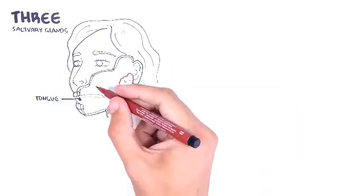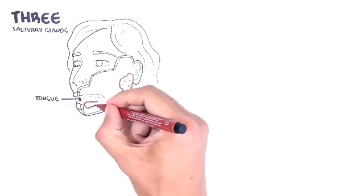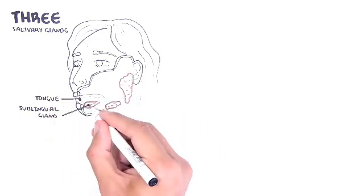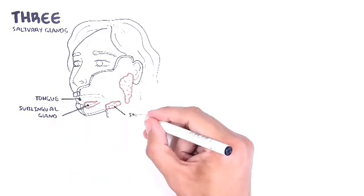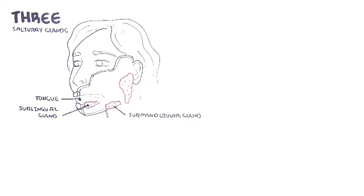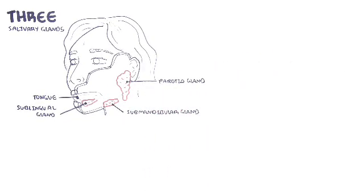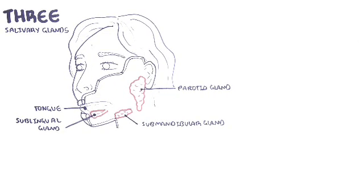Sitting below the tongue you have the two sublingual salivary glands. Under the mandible, your lower jaw to the back of the mouth, you have the two submandibular salivary glands. And then you have the bilateral parotid glands, which is the largest salivary gland sitting posterior to the masseter muscle and anterior to the sternocleidomastoid muscle.